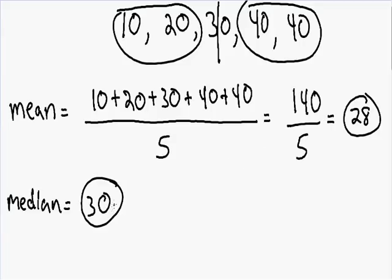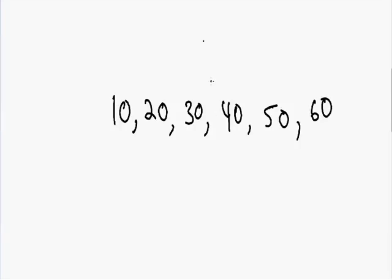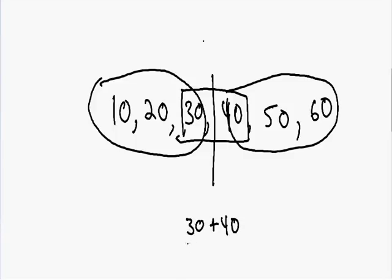Just a quick side note: the median is a little different if you have an even set of numbers. Let's say we had the numbers 10, 20, 30, 40, 50, and 60. Now instead of 5 numbers, we have 6. The middle falls between 30 and 40, with three numbers on each side. Whenever this happens, you take the two middle numbers and average them together. So 30 plus 40 divided by 2 is equal to 35 — the median for this data set is 35.